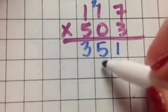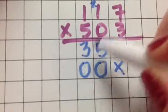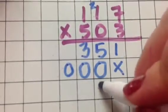Okay, placeholder, now I'm going to deal with the 0. 0 times 7 is 0. 0 times 1 is 0. 0 times 1, 0.